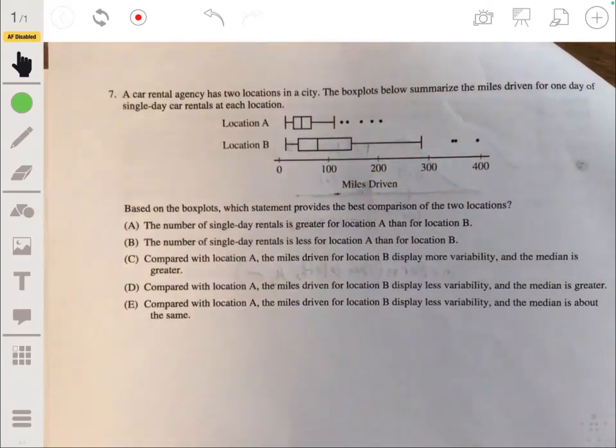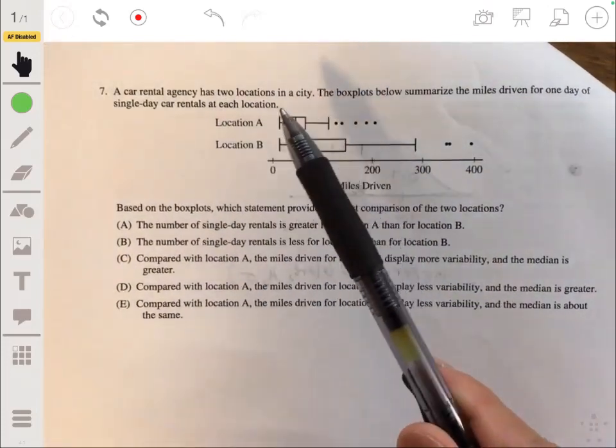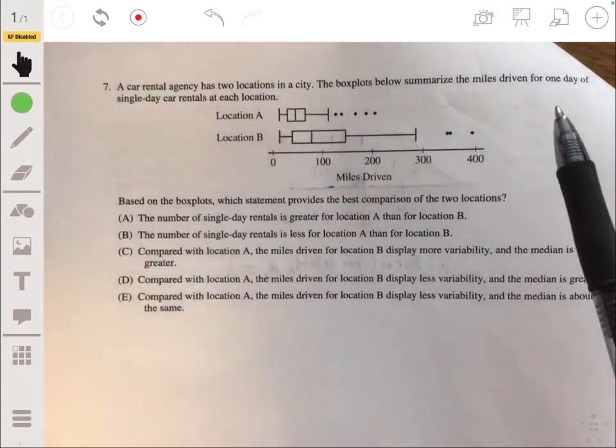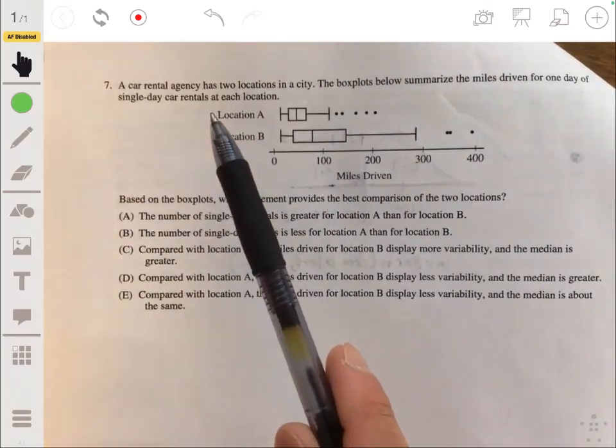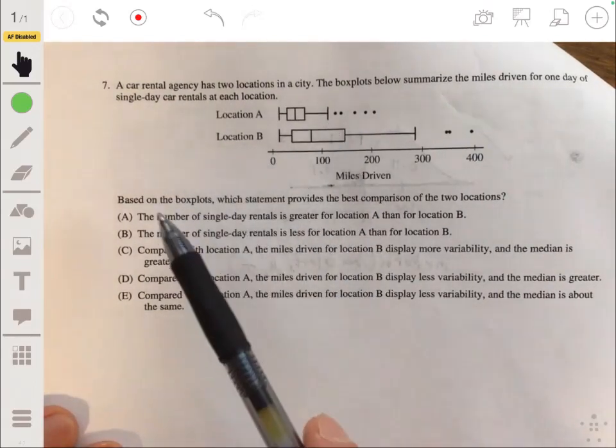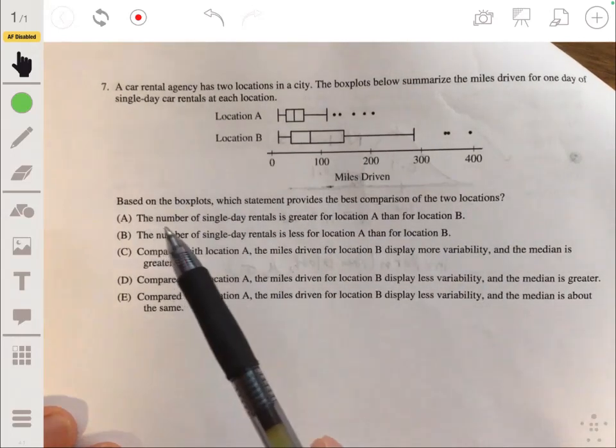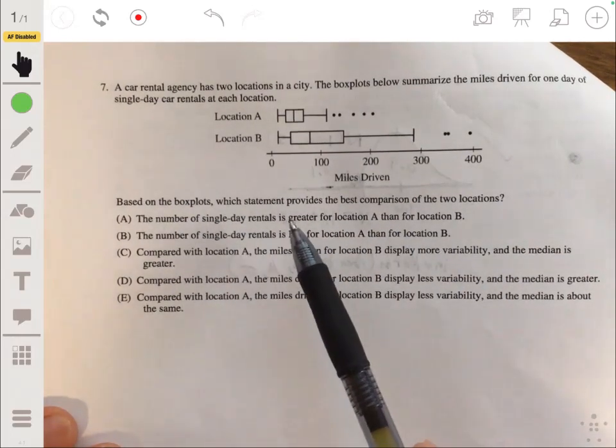Seven. A car rental agency has two locations in a city. The box plots summarize the miles driven for one day of single car rentals at each location. Based on the box plots, which statement provides the best comparison of the two locations? So let's go through each one.